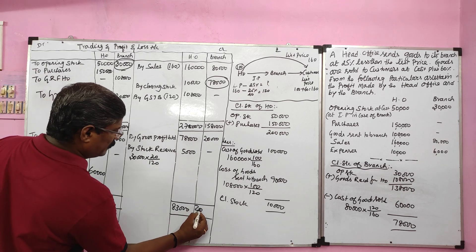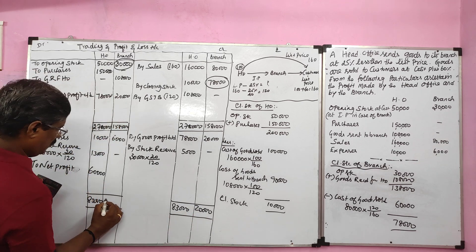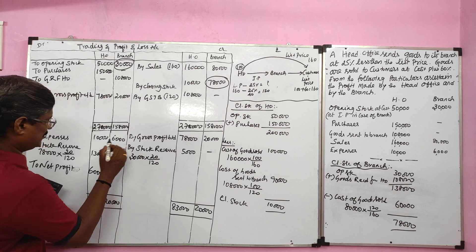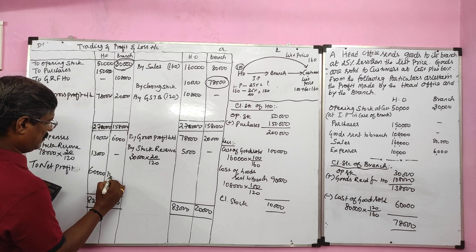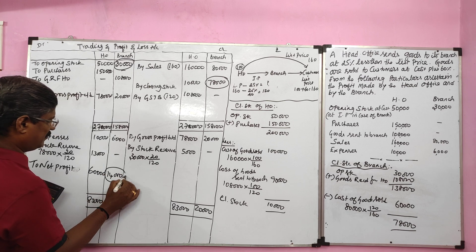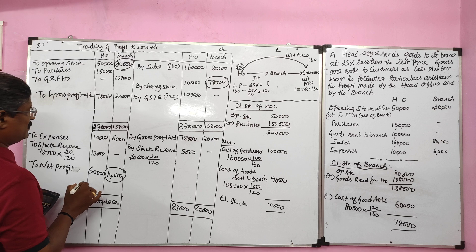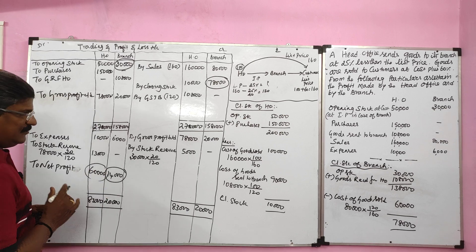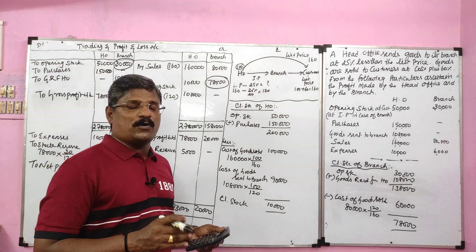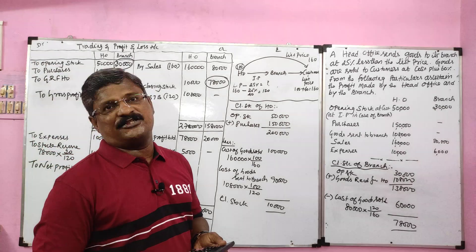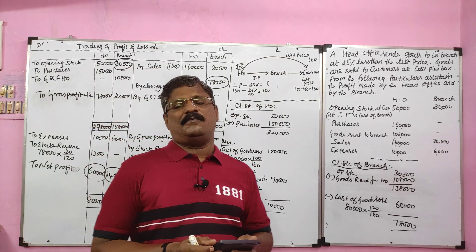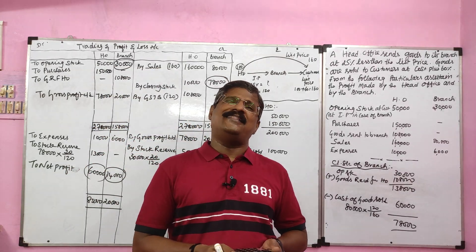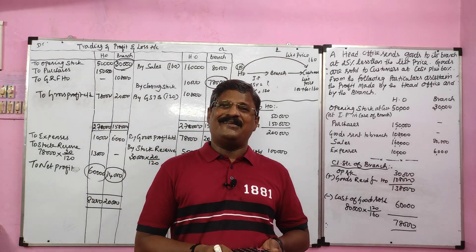For branch: gross profit 20,000 minus expenses 6,000 gives branch net profit of 14,000. So head office net profit is 60,000 and branch net profit is 14,000. We solved two problems in relation to the wholesale branch system; in the next class we will solve a different problem. Thank you.